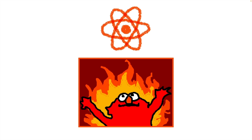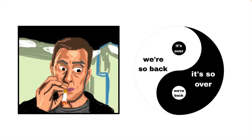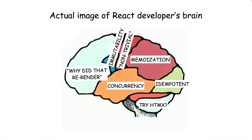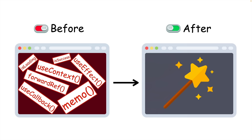React just got a major update in version 19. But before you get alarmed about how much time it'll take to learn a new version of React, I want to give you some good news. React 19 is less about the code you have to write, and more about the code you don't have to write anymore. Let's take a look at what React code you'll be able to remove in React 19, plus some new features it offers to help you build your React projects faster.